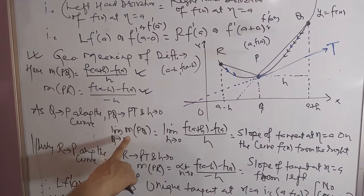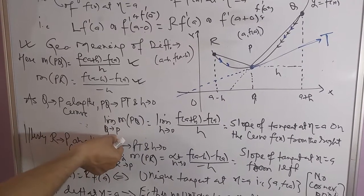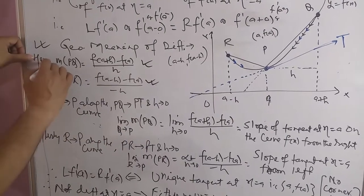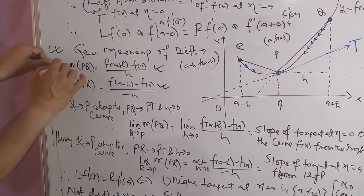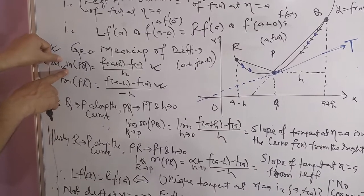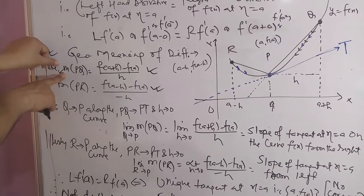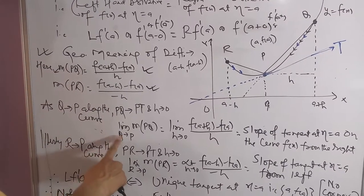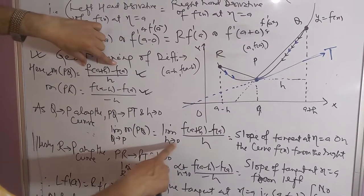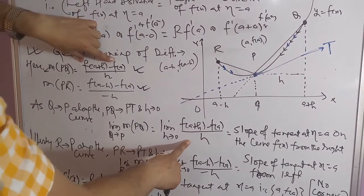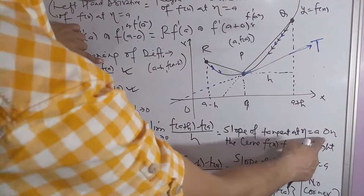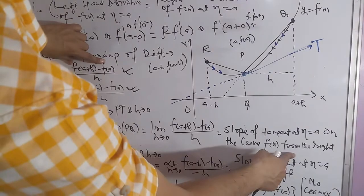The limit of the slope of PQ as Q tends to P equals limit h tends to 0 of [f(a plus h) minus f(a)] upon h. This expression is called the slope of the tangent at x equal to a from the right.